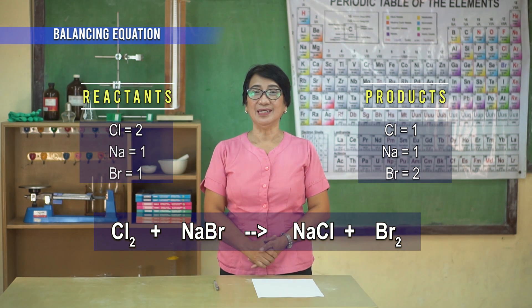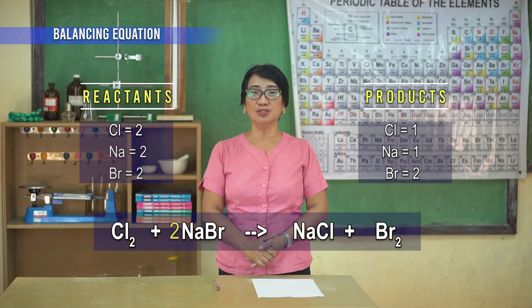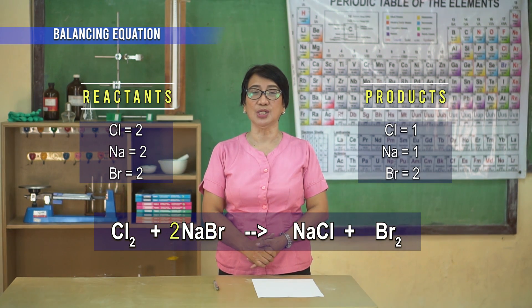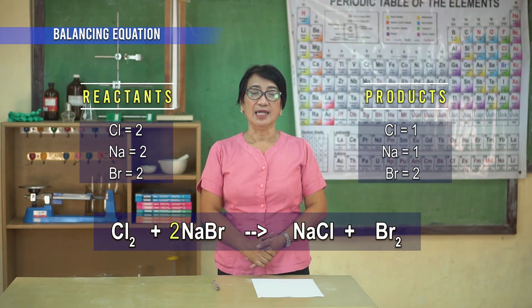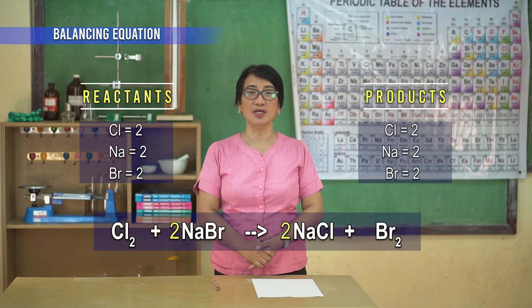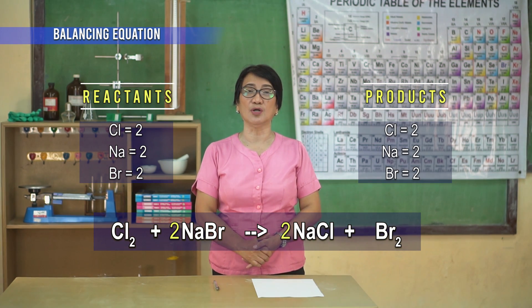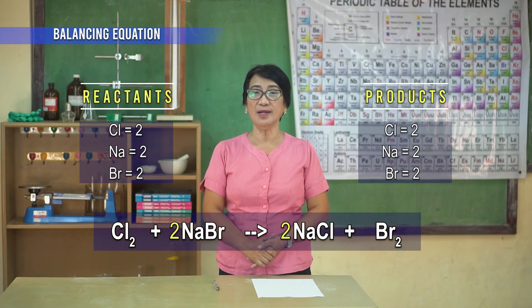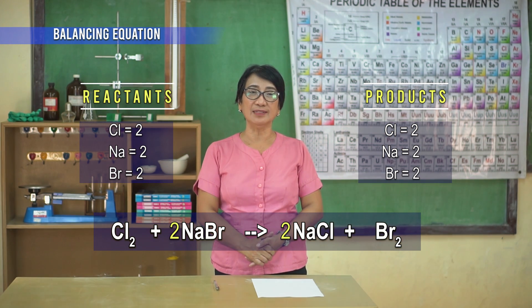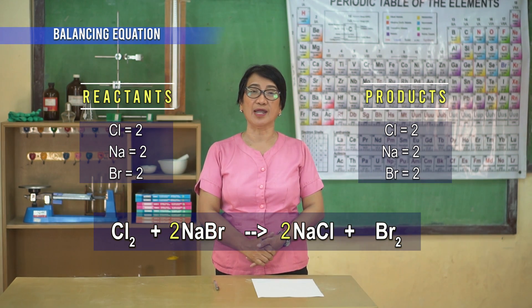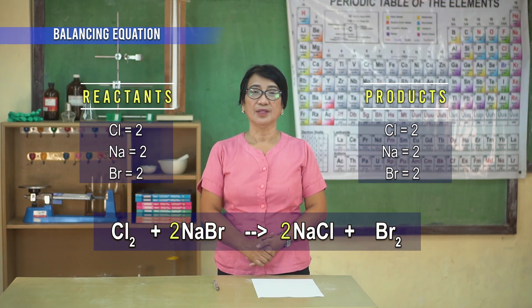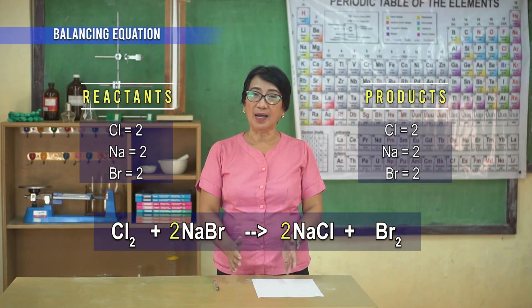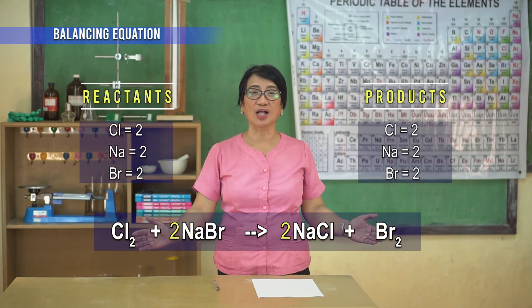Step three: let us put a coefficient of 2 in front of the sodium bromide molecule on the reactant side. On the product side, we will also add a coefficient of 2 in front of sodium chloride. Step four: check your work by counting the atoms of elements in the reactant and in the product side. Finally, we have the balanced chemical equation.